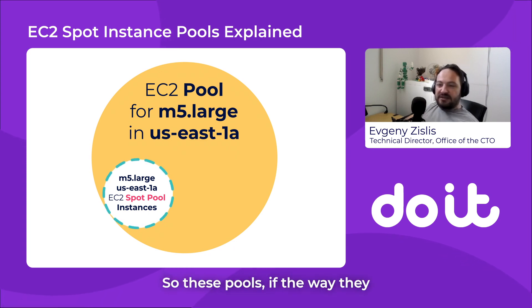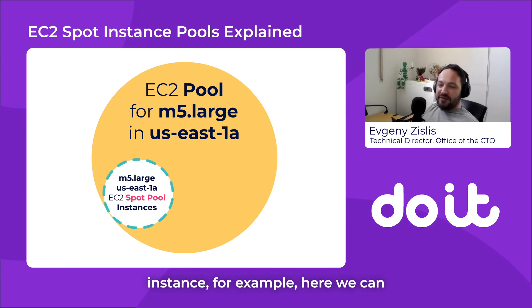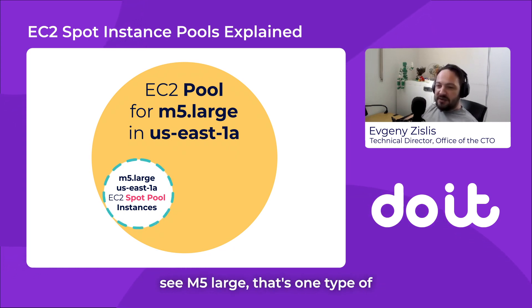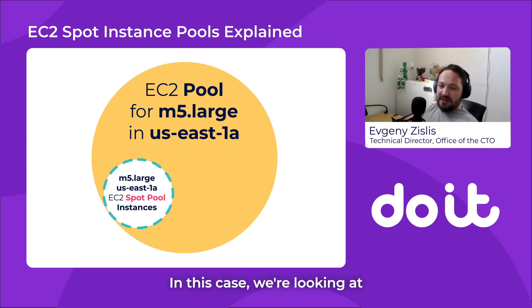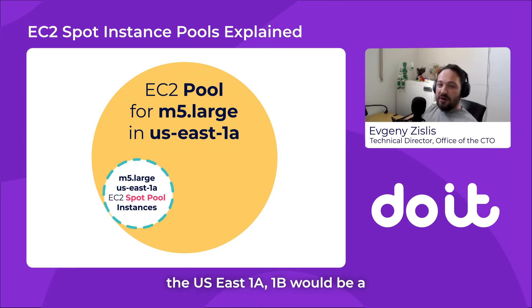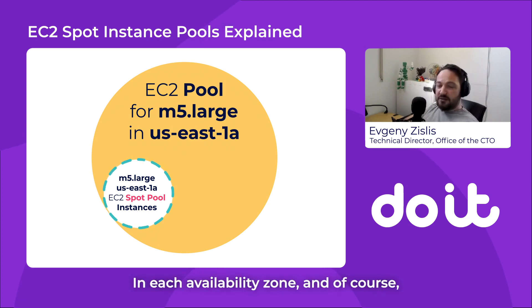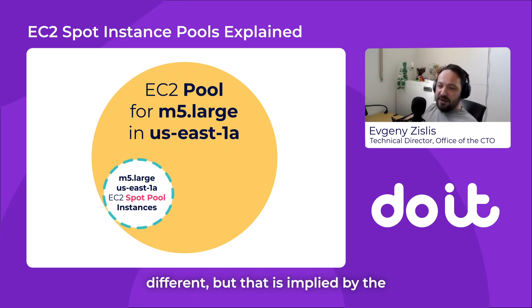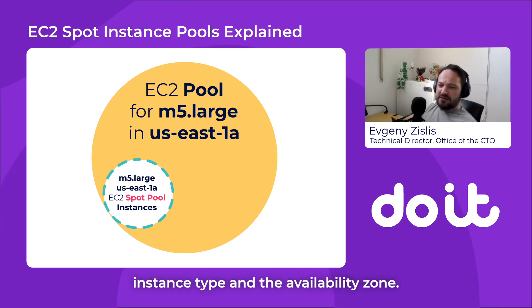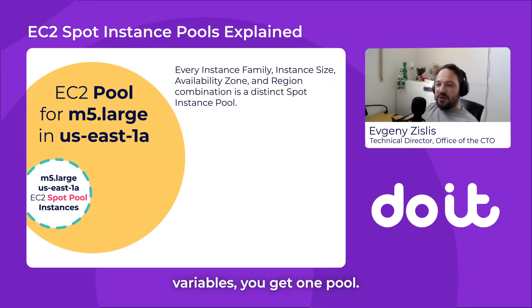These pools — the way they're described is that each type of instance, for example M5 large, is one type of instance in each availability zone. So in the region you have multiple of these. In this case, we're looking at US East 1A; 1B would be a different availability zone. Every region and family is different, but that is implied by the instance type and the availability zone. So for that pair of variables, you get one pool.